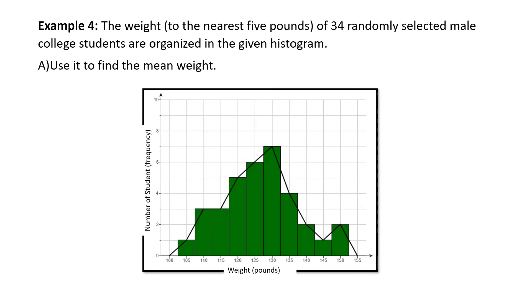Example, the weight to the nearest 5 pounds of 34 randomly selected male college students are organized in the given histogram. Use this histogram to find the mean weight.